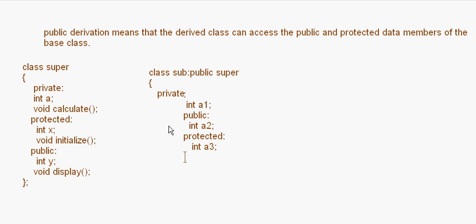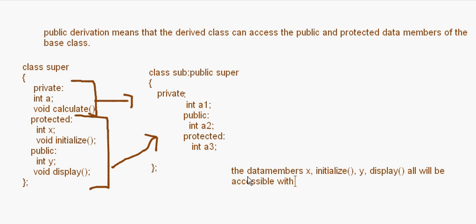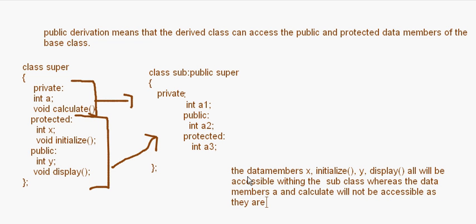So what happens here is all of these — the protected and public members — go into the subclass, and the private section also goes there. But the difference is: the data members x, initialize, y, and display will all be accessible within the subclass, whereas the data members a and calculate will not be accessible as they are private to the super class.